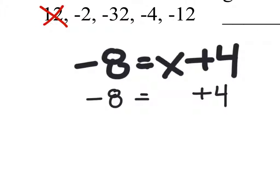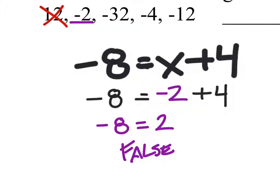Now we can continue by replacing the x with negative 2. Negative 2 plus 4, that would give us a positive 2. So we have negative 8 equals 2. No, this is false. So it looks like negative 2 also is not a solution.